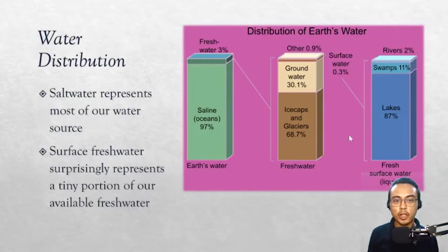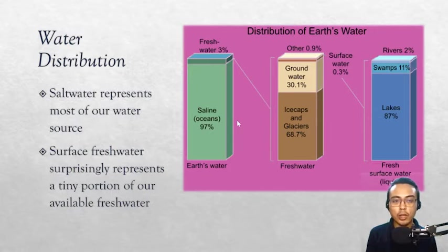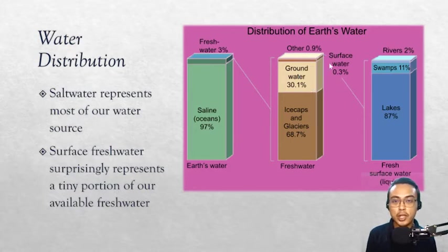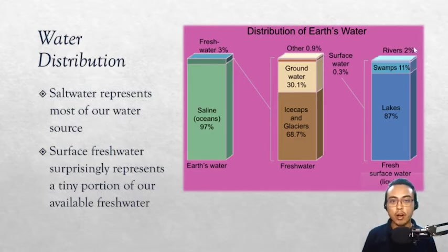In terms of water distribution, salt water makes up about 97% of the total water on Earth — water we cannot directly use without further treatment. The remaining 3% is fresh water, further divided: 68.7% is trapped frozen in ice caps and glaciers, 30.1% is trapped in groundwater, and surface water — lakes, rivers, and ponds — makes up only about 0.3% of total fresh water. Of that 0.3%, 87% is in lakes, 11% in swamps, and 2% in rivers.